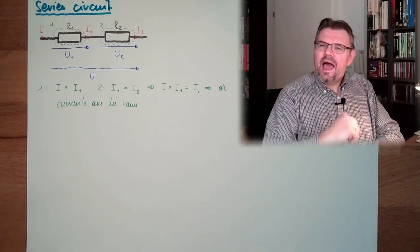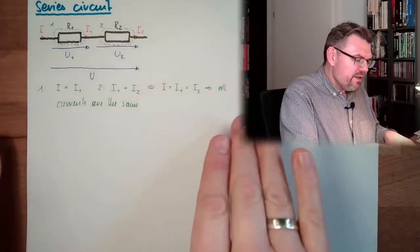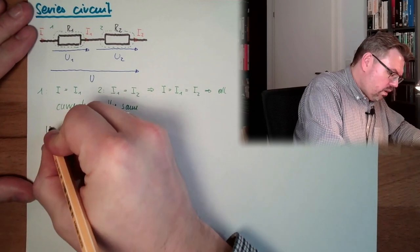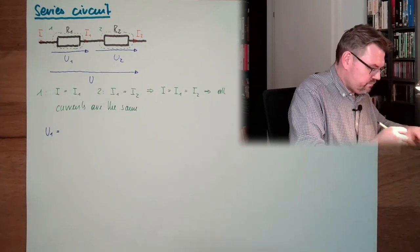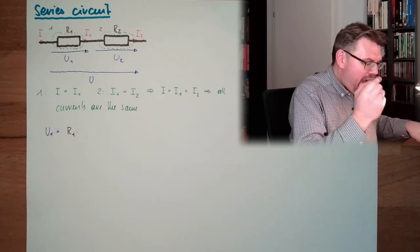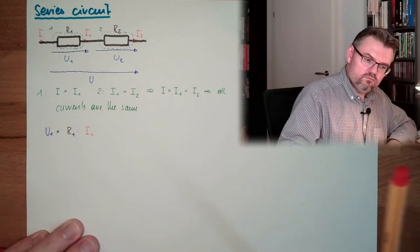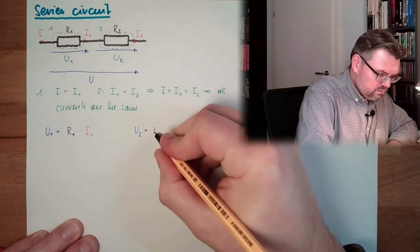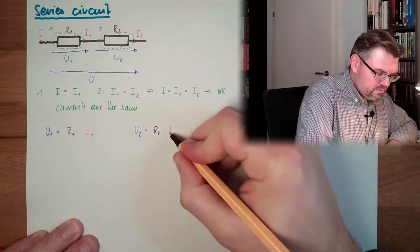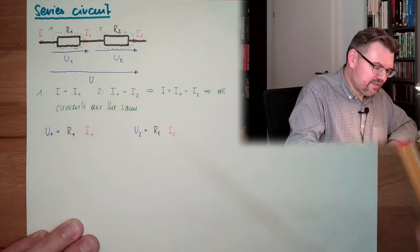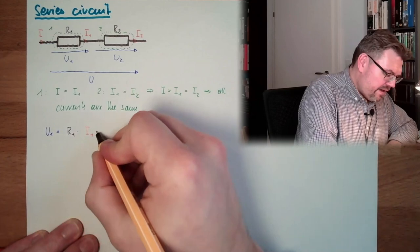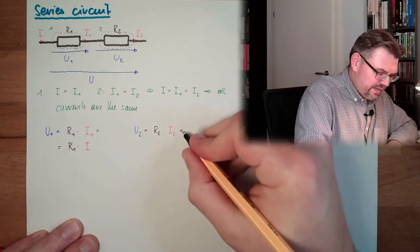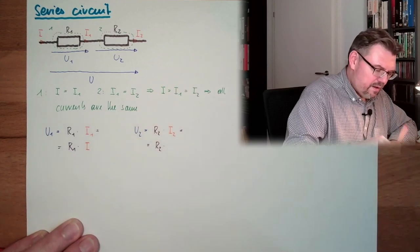Now let's look at Ohm's law. At R1, U1 equals R1 multiplied by I1. The same at R2, U2 equals R2 multiplied by I2. And since we know that all currents are the same, this is actually exactly the same as R1 multiplied by I, and this is exactly the same as R2 multiplied by I.